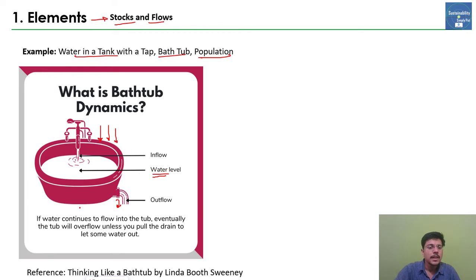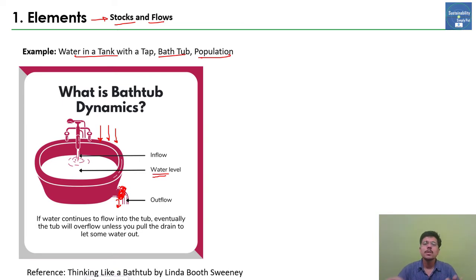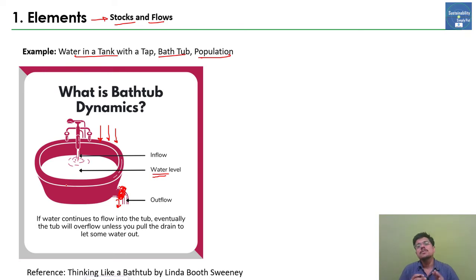If water continues to flow into the tub, eventually the tub will overflow unless you open the drain to let some water out. So if the drain is closed and you are putting water in, the tub will overflow. This is a very simple system, but it can give us a lot of insights. Now let's draw the stock flow diagram for this system — first the causal loop diagram, then the stock flow diagram.